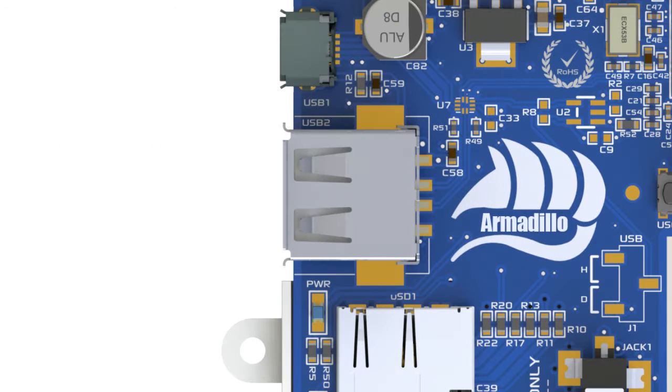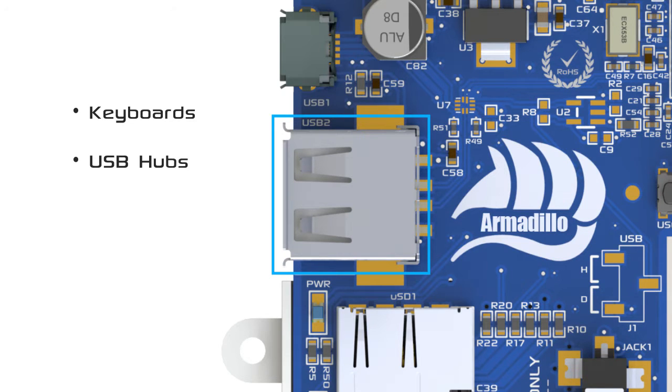The Armadillo has a USB port which can be used for peripheral devices such as keyboards, USB hubs, Wi-Fi dongles, and Bluetooth modules.